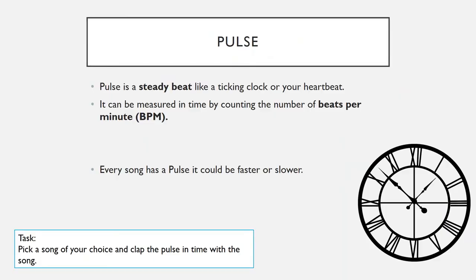First off, what is pulse? Pulse is a steady beat like a ticking clock or a heartbeat. Basically, if you listen to any song and you nod your head or tap your foot along to it, you are doing so along to the pulse of that song. It's that thing that keeps everything in time. When two musicians are playing together, they are playing at the same pulse — they may be playing two different parts, but the pulse is the same. Sometimes we refer to it as beats per minute, or BPM. Every song has a pulse; it could be faster or slower, but the pulse is always there.